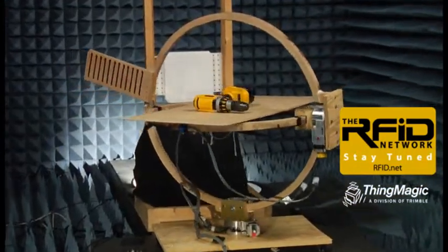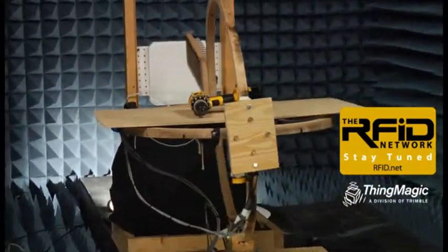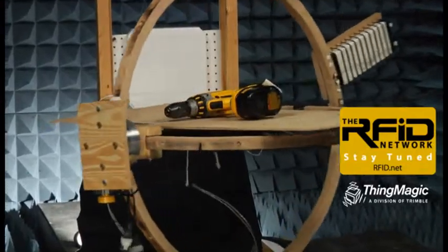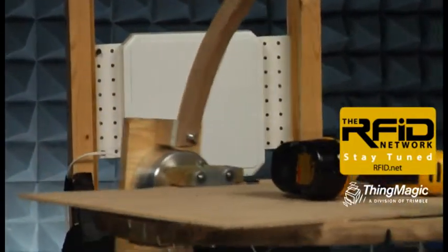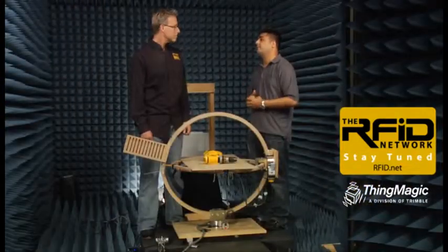This wagon wheel setup rotates in 360 degrees so you can test at every orientation possible and by looking at a graph you can figure out exactly what's the best placement for that tag.